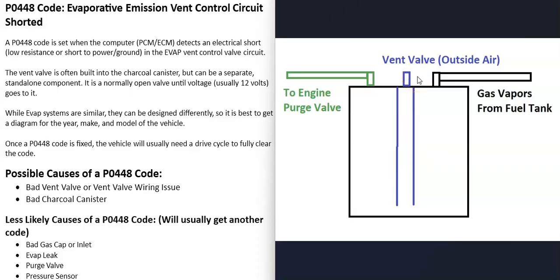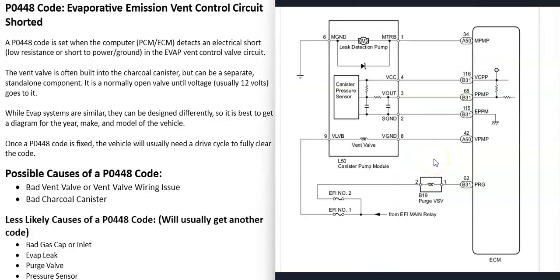These vent valves are normally open valves, which means they stay open until they get power to them - usually 12 volts. The reason there is a vent valve is that when you go to fill up the tank, all those gas vapors get pushed into the charcoal canister, and if they have nowhere to go that'll keep clicking off the gas nozzle. Those gas vapors go through the charcoal canister, get filtered through the charcoal pellets, and get pushed out through that vent valve. A very common symptom of a bad vent valve that's stuck shut is that the gas nozzle keeps clicking off when you go to get gas.